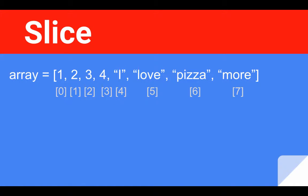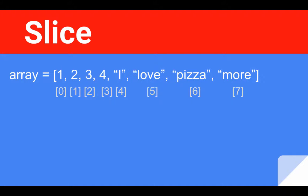So here's a sample array that we will work with in this video. We have an array here with eight items: the numbers one, two, three, four, and the strings I love pizza more. So these eight items we can track, as you know, by their index, starting at index zero and up through item eight, which is at index seven.